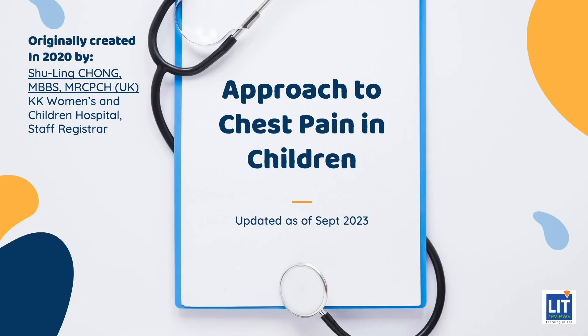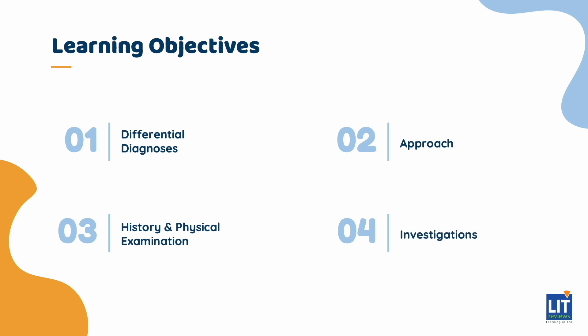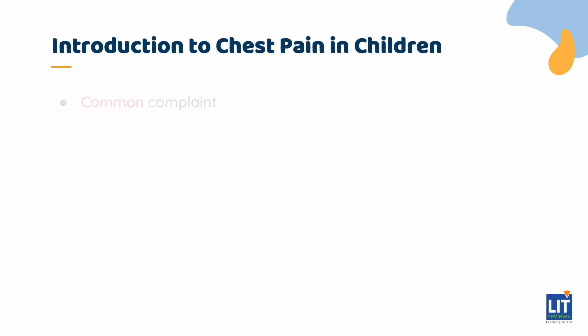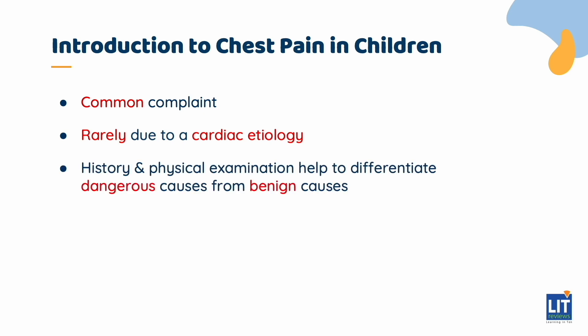This video is on approach to chest pain in children. We will be discussing the list of differential diagnoses for chest pain and the approach, which will be based on history, physical examination, and investigations. Chest pain is a common complaint in the emergency department in pediatrics. However, unlike the adult population, chest pain is rarely due to a cardiac etiology. By knowing what red flags to look out for, the history and physical examination will help to differentiate dangerous causes from benign causes.